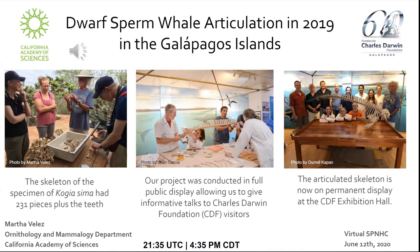Even though the distribution of this species is worldwide, this was the first specimen collected in the Galapagos, and it was very important to have this record visible to the community of the Galapagos Islands. Godfrey Merlin, a naturalist and resident of Santa Cruz Island, was the person who collected and completed the entire cleaning process of the bones. The bones were in perfect condition and only a few phalange pieces were missing. The Charles Darwin Foundation agreed with Godfrey to display the specimen in their exhibition hall, and they asked the academy for help with the articulation process.